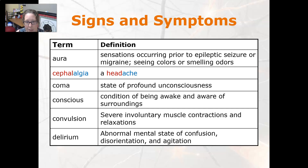Coma is a state of profound unconsciousness. Being conscious is a condition of being awake and aware of your surroundings. Convulsion is a severe involuntary muscle contraction and relaxation, so what we often refer to as seizures.